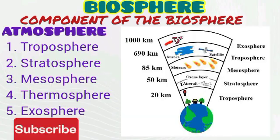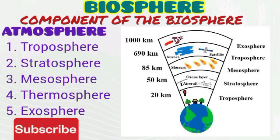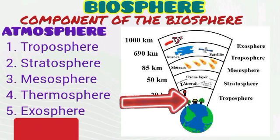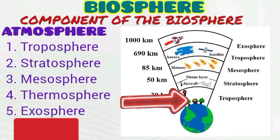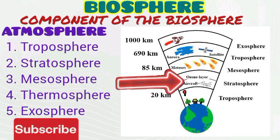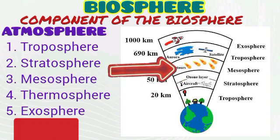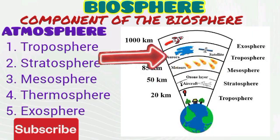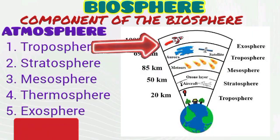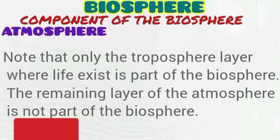Take note that the atmosphere is divided into layers. We have the lower atmosphere called the troposphere, we have the stratosphere, we have the mesosphere, we have the thermosphere, and we have the exosphere. These layers will be discussed one after the other.